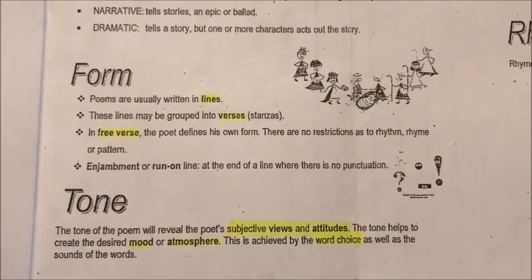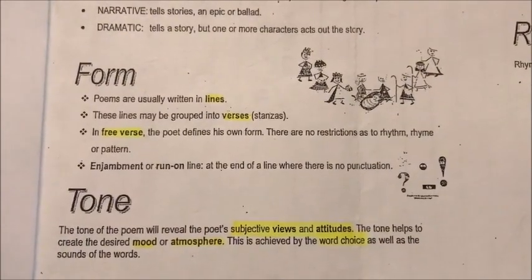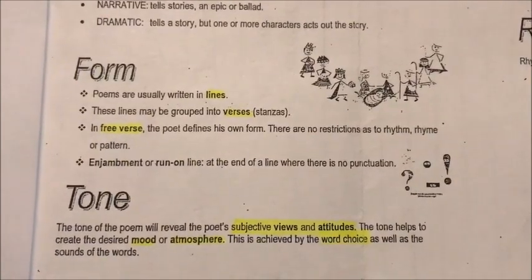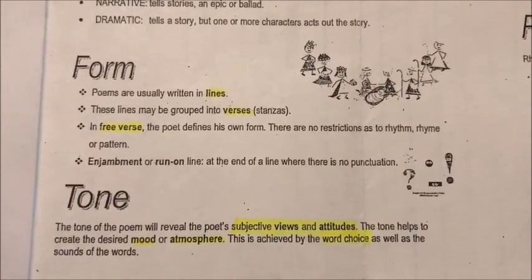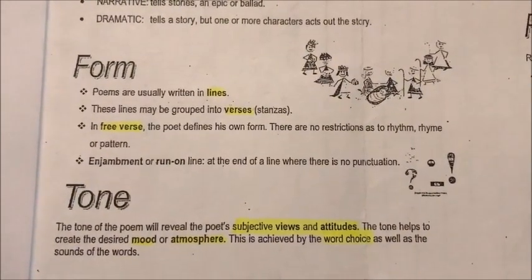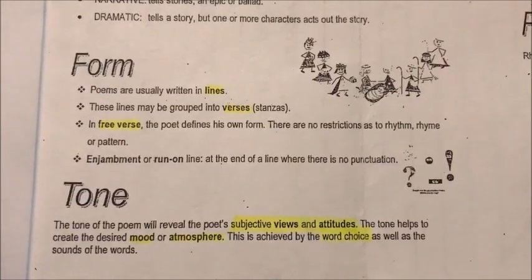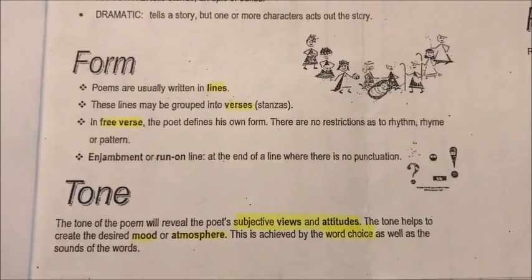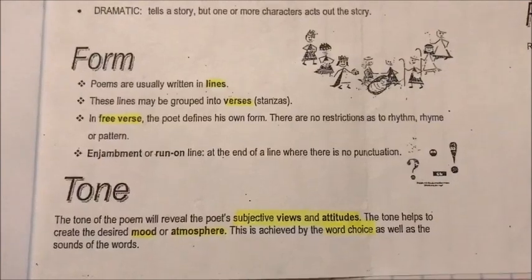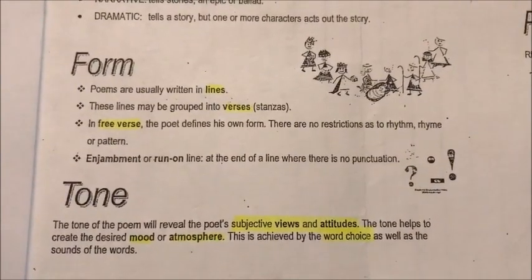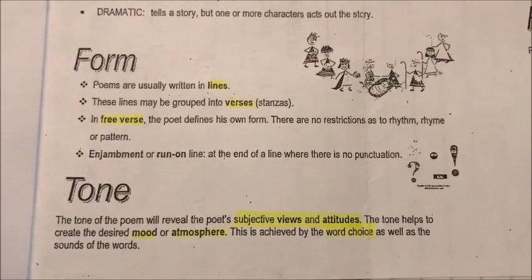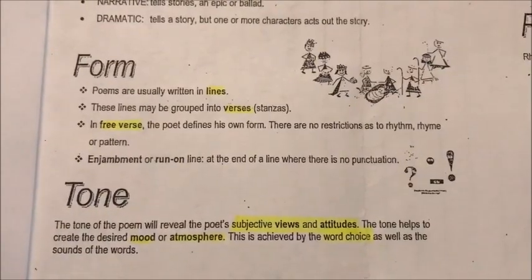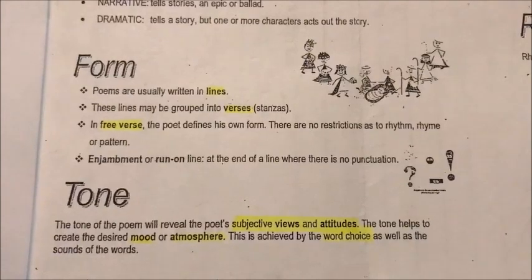Then we get to tone. The tone of the poem will reveal the poet's subjective views and attitudes. Subjective betekent subjectief — onthou, jy kry die idee wat die dichter wil oordra. So as die dichter een slegte ervaring met iets gehad het, gaan hy dit met jou deel. Subjectief betekent jy word beïnvloed deur jou eie ervarings, terwyl iemand wat objectief is nie so beïnvloed word nie. So hou altyd in gedagte: subjectief is die dichter sy opinie, dit is die dichter sy boodskap wat hy wil oordra — dit is nie noodwendig waarheid nie.